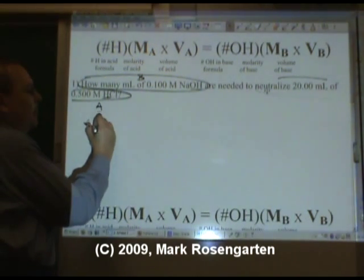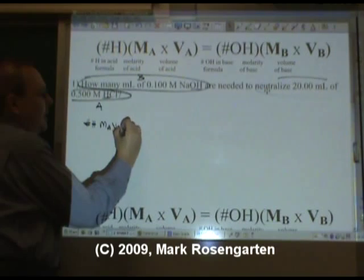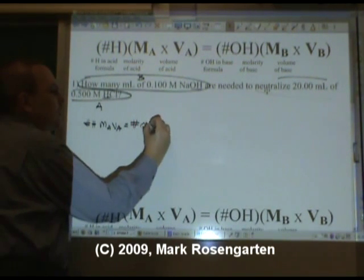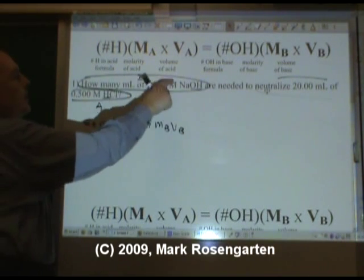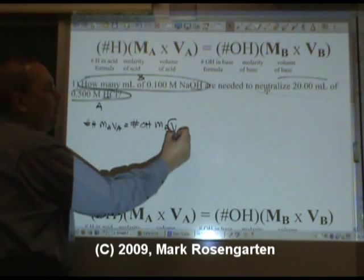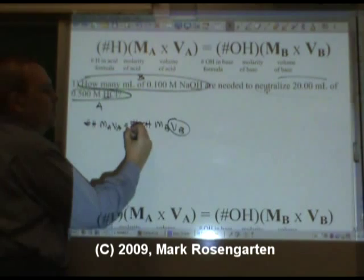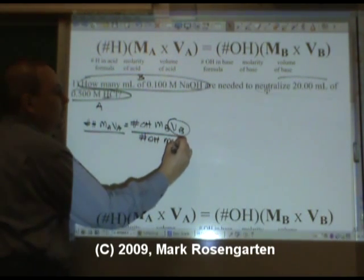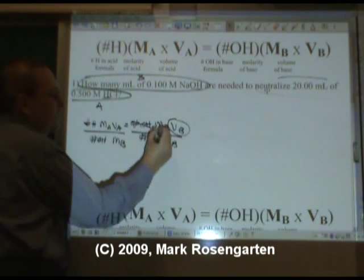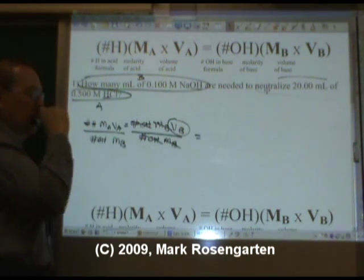So the equation is number of H's MAVA equals number of OH's MBVB. And we're asked how many milliliters of base do we have? We want to know the volume of the base. So we divide both sides by number of OH's MB. And they cancel out. And then we can simply plug in.